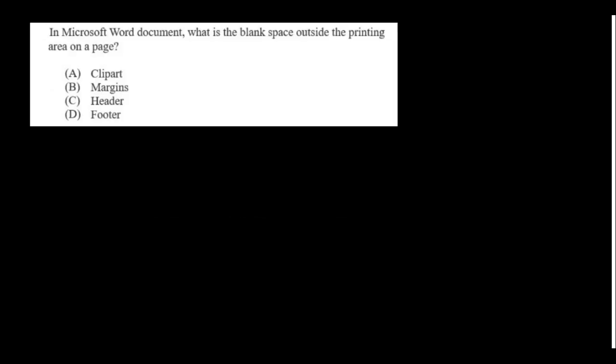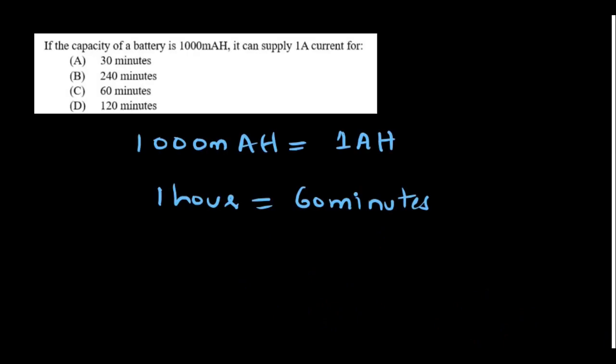In Microsoft Word, the blank space outside the printing area is the margins. If the capacity of a battery is 1000 milliampere hour, it is 1 ampere hour. So the battery can supply 1 amp current for 1 hour—1 hour means 60 minutes. So option C is the right answer, 60 minutes.